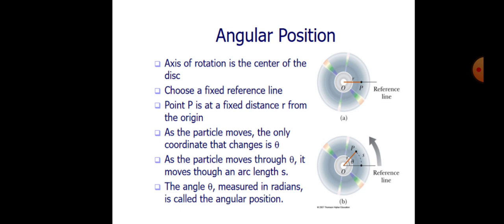For angular positions, a disk is shown with points A and B and a reference line. Point P is at a fixed distance from its original position. As a particle moves, the only coordinate that changes is theta. As the particle moves through angle theta, it moves through arc length s. The angle theta measured in radians is called the angular position.